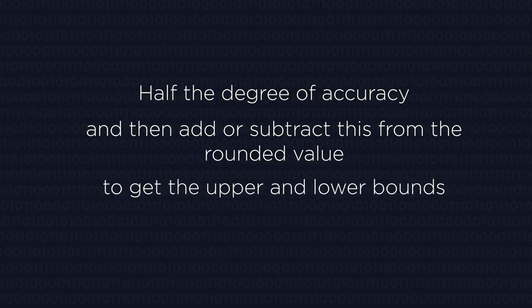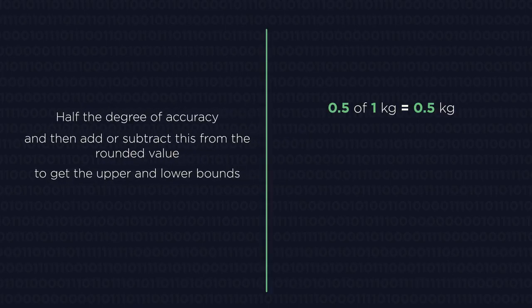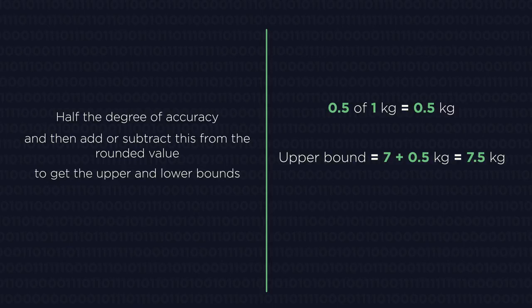So for our 7 kg baby to the nearest kilogram, the degree of accuracy is 1 kg. So half of this is 0.5. 7 kg add 0.5 is 7.5 kg for the upper bound, and 7 kg subtract 0.5 is 6.5 kg for the lower bound.